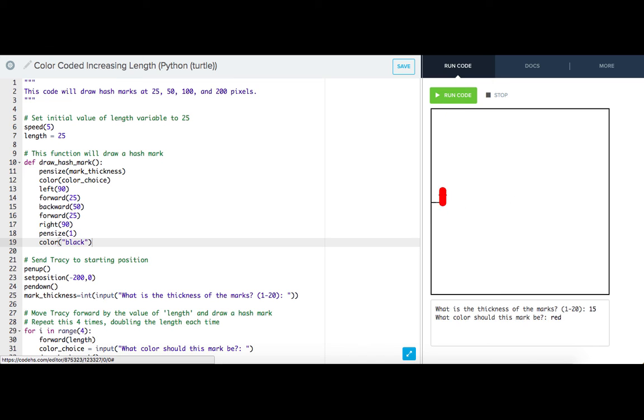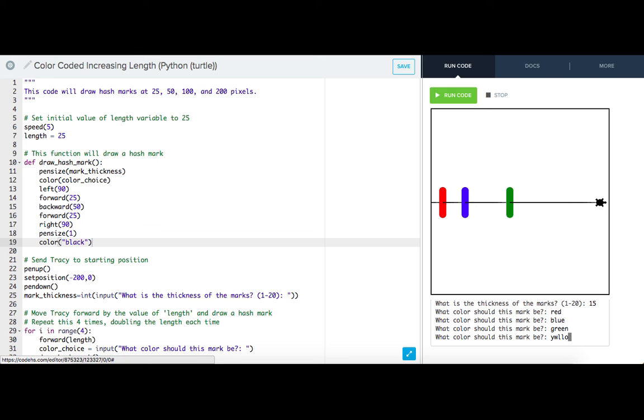Thickness of 15. Let's say the first one should be red, blue, green, yellow. Awesome.